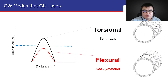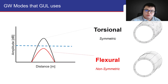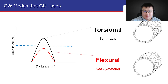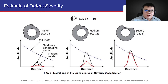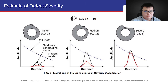The GuidedWave modes that GUL uses are the torsional and flexural modes, which are represented by the black and red signals on the A-scan, respectively. The severity of the defect can be estimated by the amplitude of the black and red signals relative to the call deck. For more information, you can refer to international standards such as ASTM E2775-16.